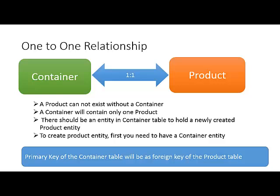Just to simplify it further in terms of database, we can say that the primary key of the container table will serve as the foreign key of the product table. So having this requirement in front of us, let us see how we can implement that in Entity Framework code first approach.